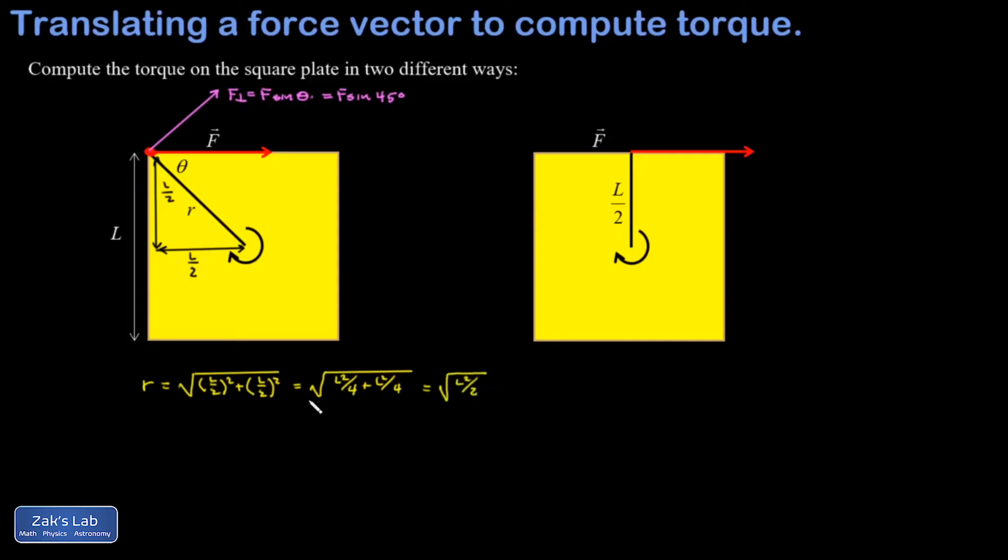I can pull the L out of that and write it as L over square root 2. Finally, I'm going to write down the torque exerted by this force. So it's the perpendicular component of the force—that was F sine 45 degrees—times the size of the lever arm, which was L over root 2.